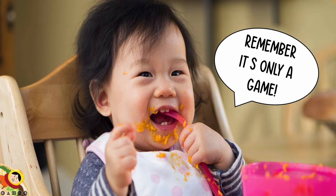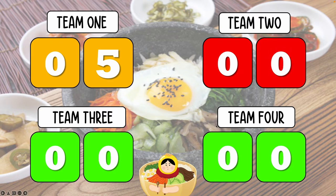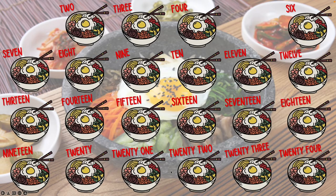She's in the left hand corner this time. So this time team two got no points, so just leave them at zero. Click on the lady in the bibimbap — back to the main question slide.